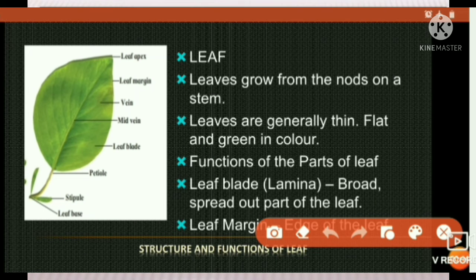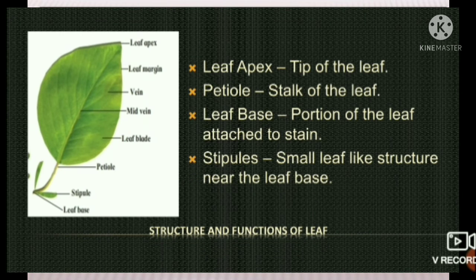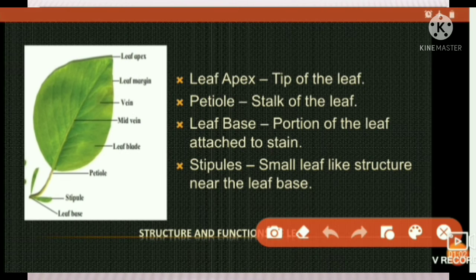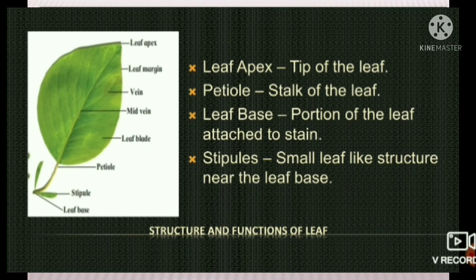Leaf blade — it is also called the lamina, the broad spread out part of the leaf. Leaf margin is also called the edges of the leaf. Leaf apex is the tip of the leaf. The stalk of the leaf is called the petiole. The portion of the leaf attached to the stem is called the leaf base. Stipules are small leaf-like structures near the base of the leaf.